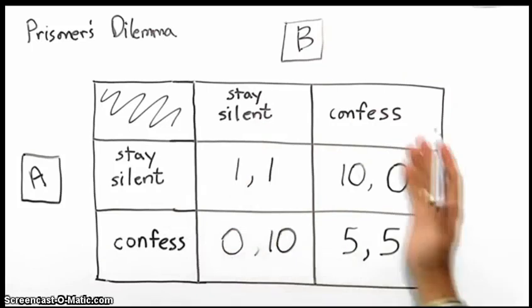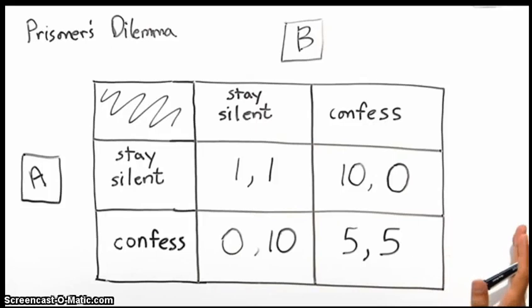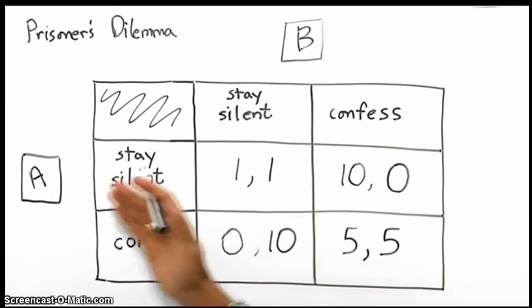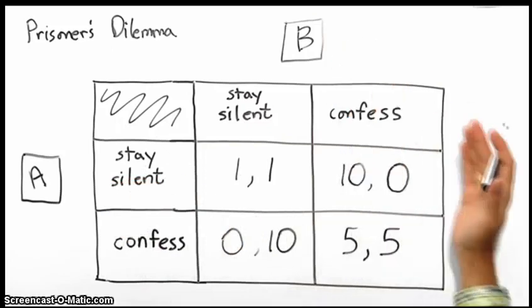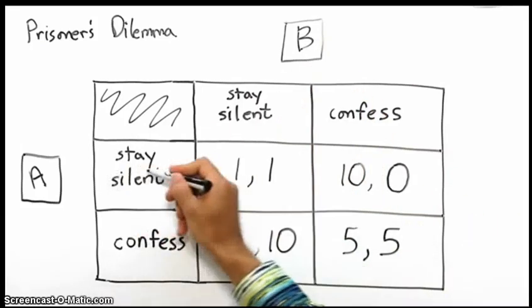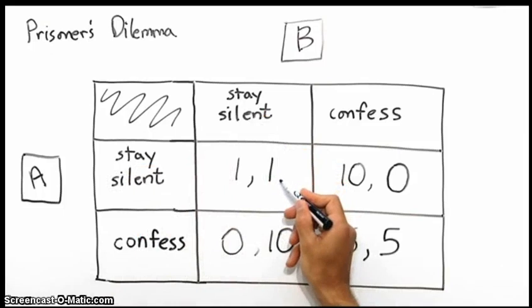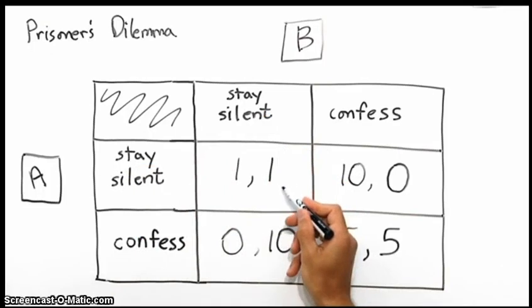And what this dilemma does, it creates a very interesting situation for both Prisoner A and Prisoner B, who, remember, can't communicate. Essentially, it boils down to trust. Does Prisoner A trust Prisoner B enough to stay silent? Does Prisoner B trust Prisoner A enough to stay silent? Because if they both stay silent, they will only receive a one-year penalty for both of them.